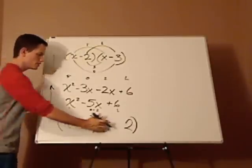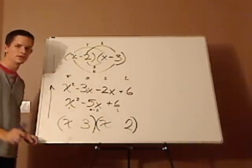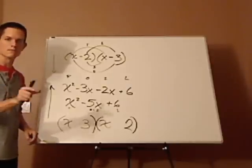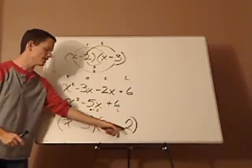Now, what signs go here and here? Well, this is plus. So it's either going to be plus plus or minus minus, because you're multiplying this and this.